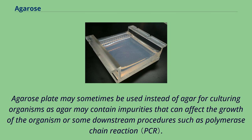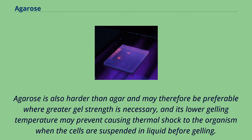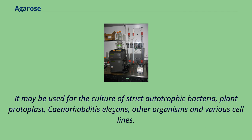Agarose plates may sometimes be used instead of agar for culturing organisms, as agar may contain impurities that can affect the growth of the organism or some downstream procedures such as polymerase chain reaction. Agarose is also harder than agar and may therefore be preferable where greater gel strength is necessary, and its lower gelling temperature may prevent causing thermal shock to the organism when the cells are suspended in liquid before gelling. It may be used for the culture of strict autotrophic bacteria, plant protoplasts, Caenorhabditis elegans, and other organisms in various cell lines.